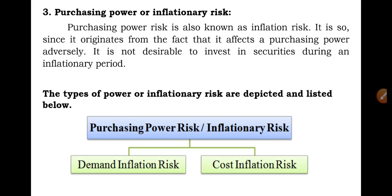Cost inflation risk arises due to sustained increase in the prices of goods and services. It is caused by higher production cost. A high cost of production inflates the final price of finished goods consumed by people. Cost inflation risk arises due to sustained increase in the price level of goods and services.